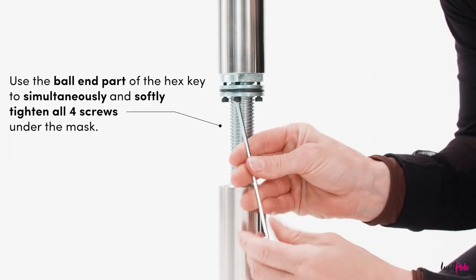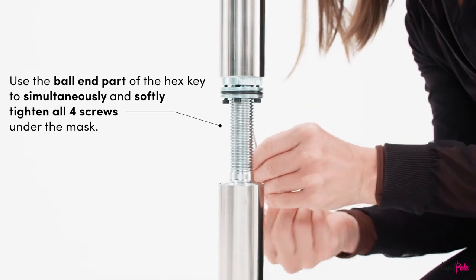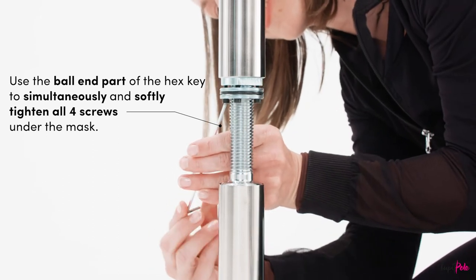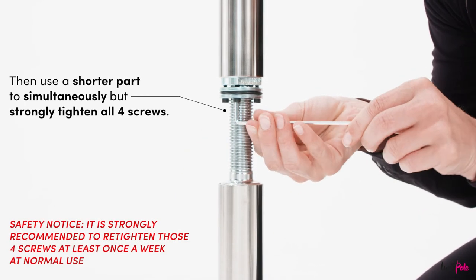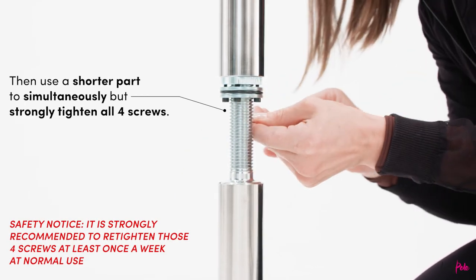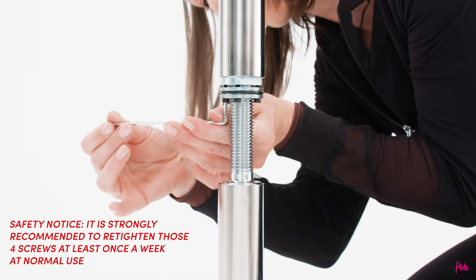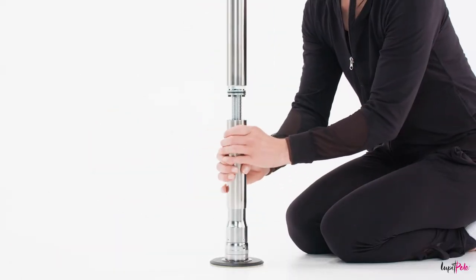Once the pole is leveled and securely tightened, use the ball end side of the hex key to simultaneously and softly tighten all four screws under the mask. And then use a shorter part to simultaneously but strongly tighten all four screws. Then raise the mask.